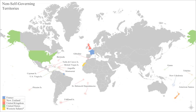The metropolitan state is the state that rules the colony. In ancient Greece, the city that founded a colony was known as the metropolis. Mother country is a reference to the metropolitan state from the point of view of citizens who live in its colony.